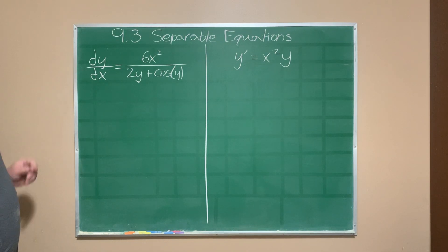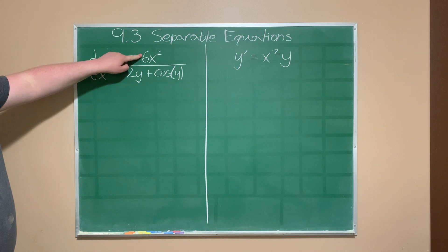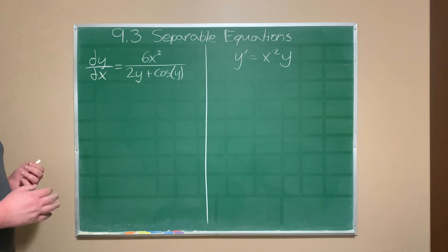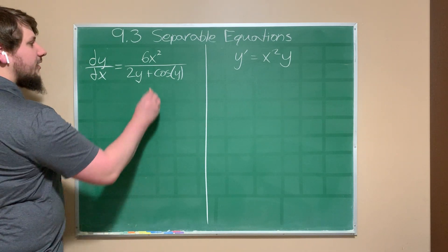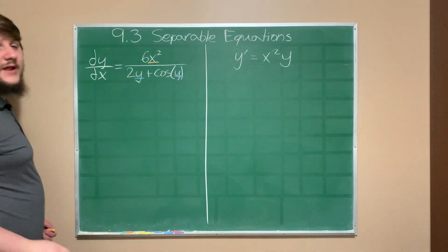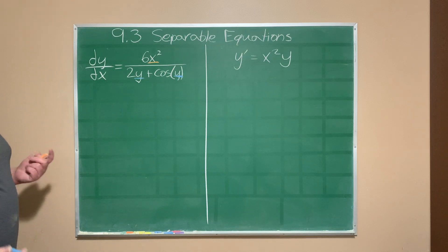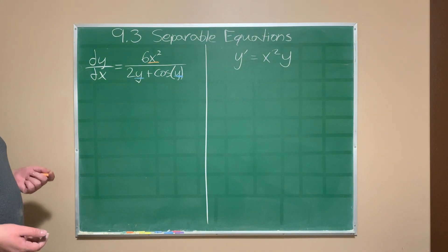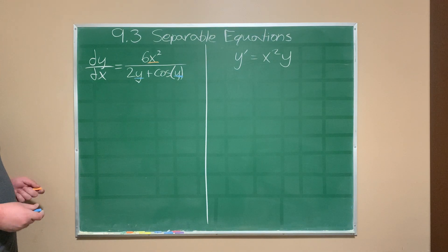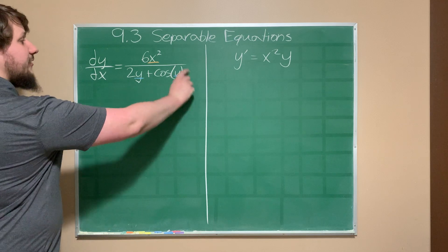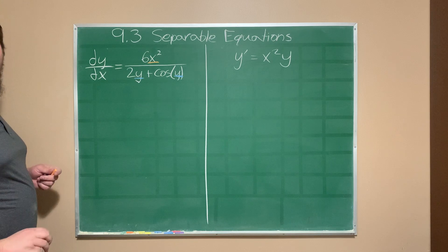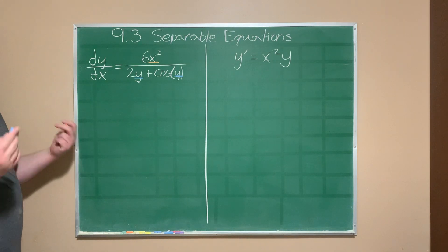We have dy/dx equal to 6x² divided by 2y plus the cosine of y. The x variable occurs only in the numerator of this fraction, and the y variable occurs only in the denominator. This is really good news because it means we can separate the numerator and the denominator using multiplication, which will completely remove all of the y's from the right-hand side and move them to the left — separating our variables.